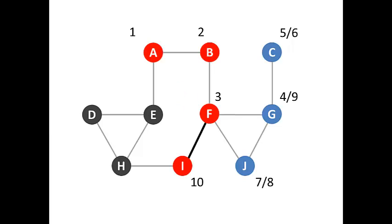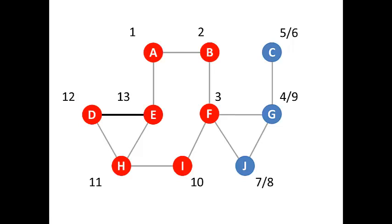From F, we have one unexplored vertex: I. So we'll go to vertex I and give it a discovery time of 10. We paint I red and look at I's edges to unexplored vertices. Next we'll go to vertex H and give H a discovery time of 11. We paint H red and look at H's connected vertices that are unexplored — we have D and E to choose from. D comes first alphabetically, so we choose D, giving it a discovery time of 12 and painting it red. D has only one edge to an unexplored vertex, which is E. So we take this path to E and give vertex E a discovery time of 13. We paint E red.